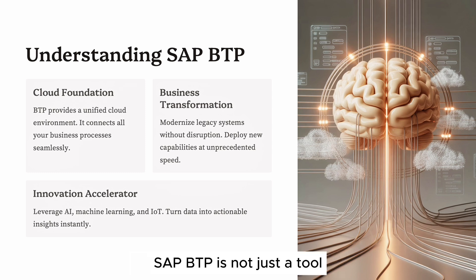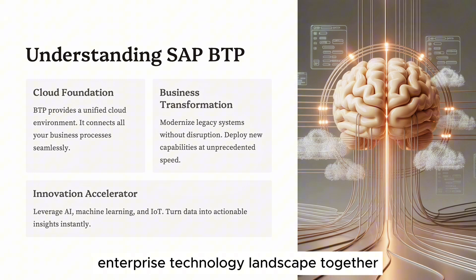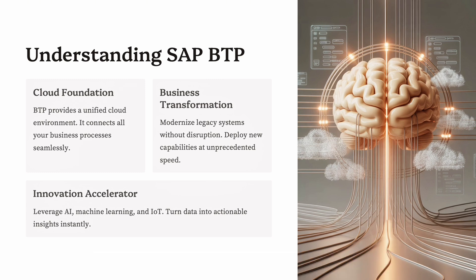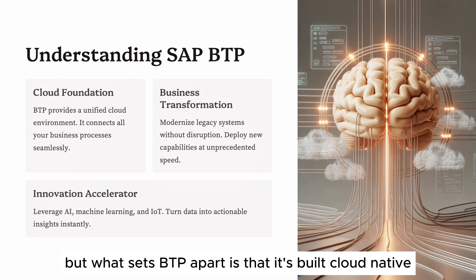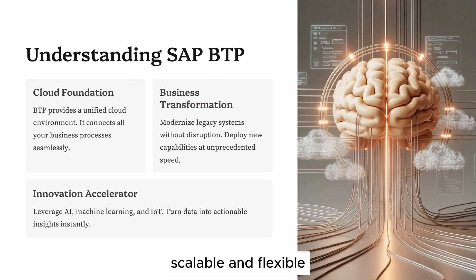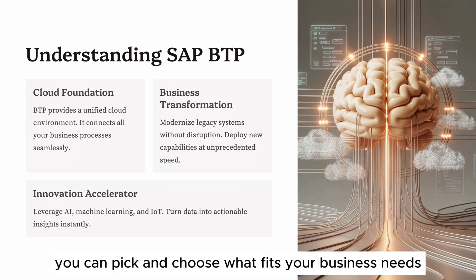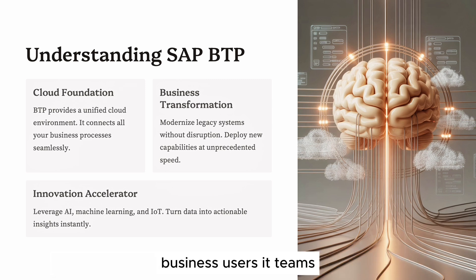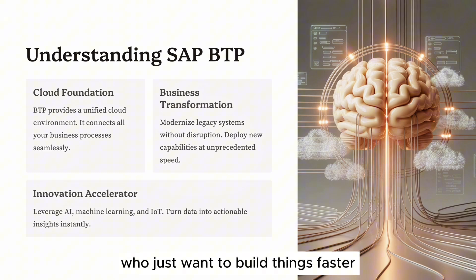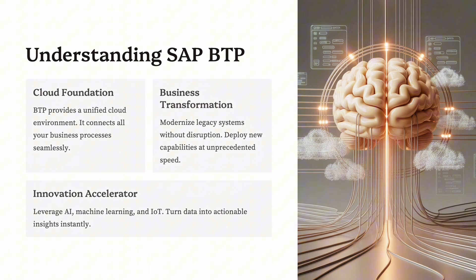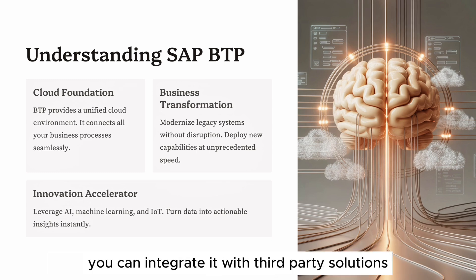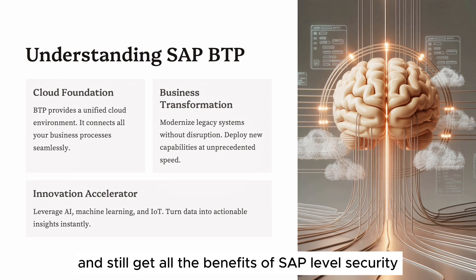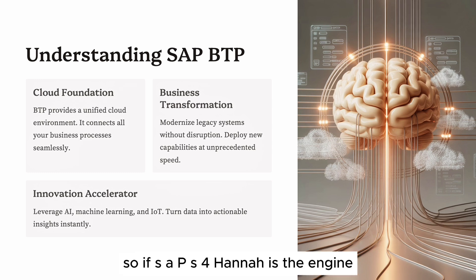SAP BTP is not just a tool — it's the connective tissue that holds your entire enterprise technology landscape together. It combines technologies across four domains: application development, data and database management, integration, and analytics. What sets BTP apart is that it's built cloud-native, scalable, and flexible. You don't need to buy the entire package — you can pick and choose what fits your business needs. It's designed for developers, business users, IT teams, and even non-technical staff. And here's the best part: BTP doesn't care whether you're running on SAP or non-SAP systems. It's vendor-agnostic, meaning you can integrate it with third-party solutions and still get all the benefits of SAP-level security, performance, and governance. So if SAP S/4HANA is the engine, then SAP BTP is the control center.